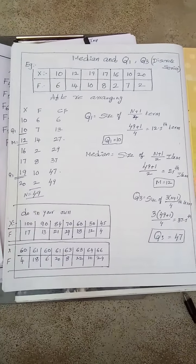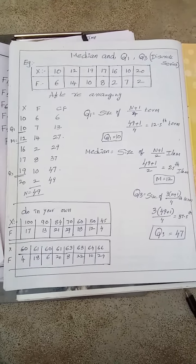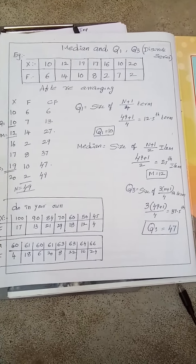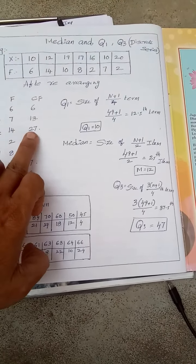And median, size of n plus 1 by 2, is 25. We got, I am getting 27 here. In 27 I am getting 25. Twelve is the median.